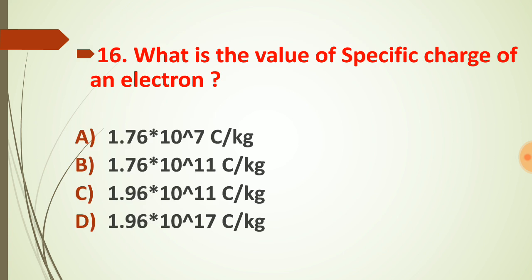Question number sixteen: what is the value of the specific charge of an electron? Specific charge is the ratio of charge to mass. The charge of an electron is 1.6 × 10⁻¹⁹ coulombs, and the mass of an electron is 9.1 × 10⁻³¹ kg. Dividing these gives 1.76 × 10¹¹ coulombs per kg, so option choice B is the correct answer.